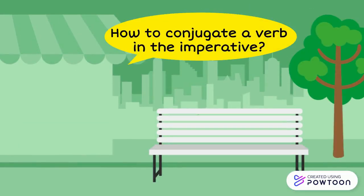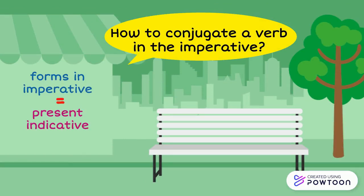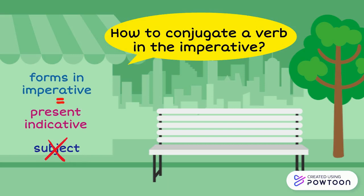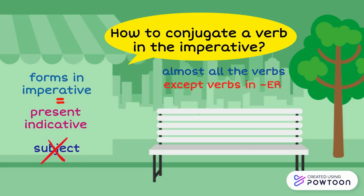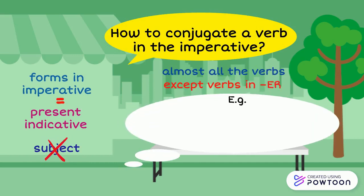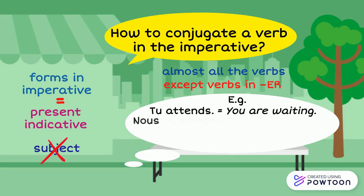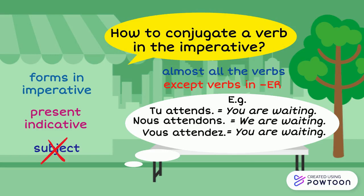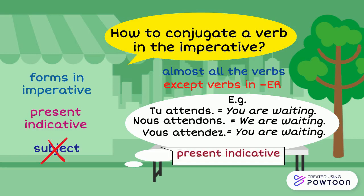How to conjugate a verb in the imperative? The forms of the verb in the imperative are often the same as in the present indicative. We simply drop the subject. This is the case for almost all the verbs, except for verbs in ER. For instance: 'Tu attends' — you are waiting. 'Nous attendons' — we are waiting. 'Vous attendez' — you are waiting. This is the present indicative.